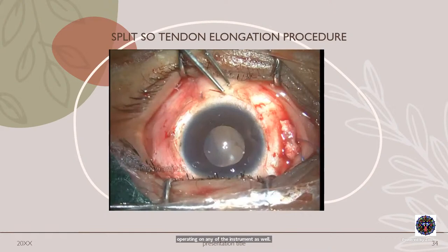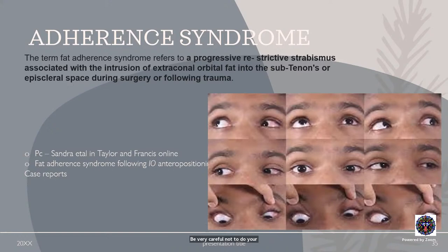In summary for Brown syndrome: conservative management is the key. Surgical management is done case by case with controlled procedures. Be very careful not to do a superior oblique free tenotomy, as you can end up with iatrogenic SO palsy.